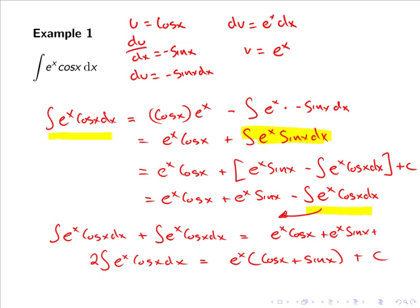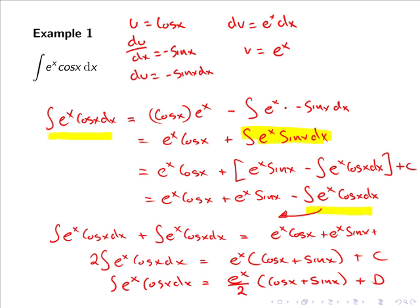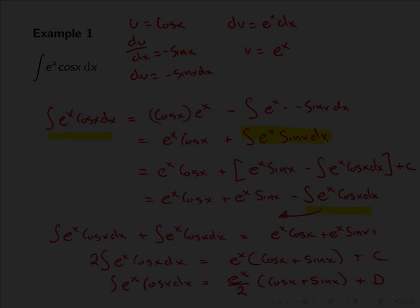Finally, dividing across by 2, we have that the integral of eˣ cos(x) dx equals one half times eˣ times (cos(x) plus sin(x)) plus a constant d, where d equals c over 2.